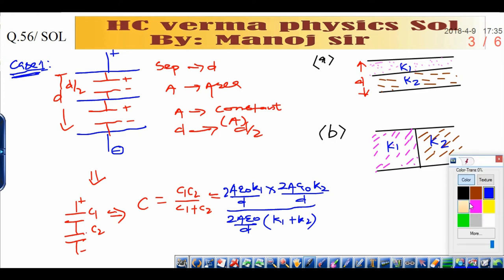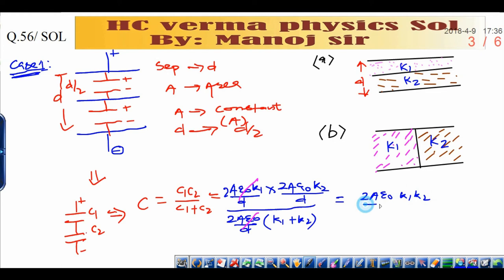In this problem when you see, this will cancel out and finally the result will be 2A epsilon naught K1 K2 divided by K1 plus K2. This is the capacity. You can conclude this is the capacitance when there are two plates which are half-half filled with dielectric material. Maybe one-third, one-fourth, whatever they have filled with dielectric material, you should apply this. This is only for two; if there are more than two, you can put more in series.